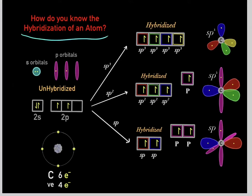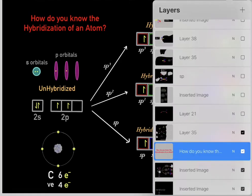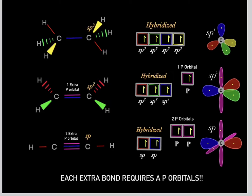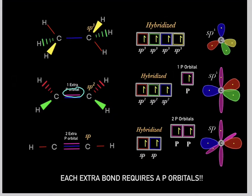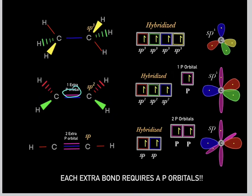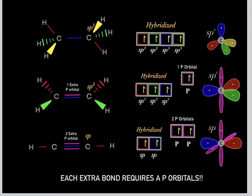How do you determine the hybridization of an atom? A simple trick is: whenever there's an extra bond, you know it requires a p-orbital. For example, if a carbon has a double bond, it has one extra bond, which means it requires one p-orbital. So this carbon must be sp2-hybridized.